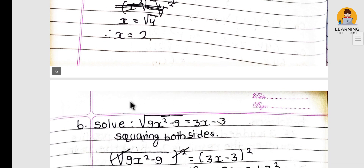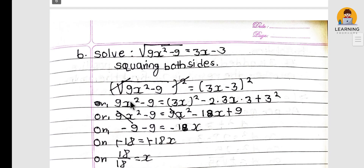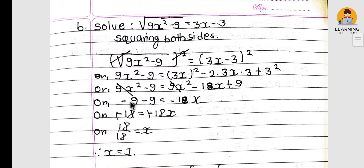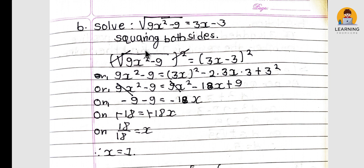Solving the equation: √(9x² − 9) = 3x − 3.